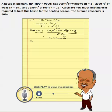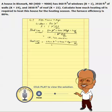Similarly, we can calculate heat loss through the walls. Wall area is 2,920 square feet, times 9,000 degree-Fahrenheit days, times 24 hours per day, divided by the R-value of 19 for walls. Canceling out the units, this turns out to be 33,195,789 BTUs.